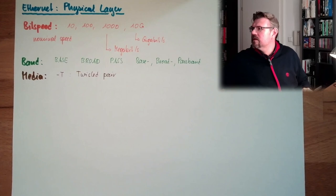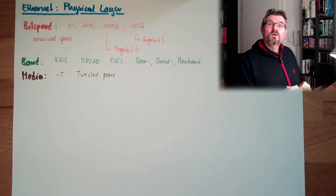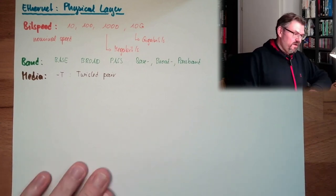So the category somehow indicates how good the shieldings are, how good they are protected from electromagnetic influences. This is a twisted pair cable. This is the thing which we usually identify as Ethernet cable. So that's twisted pair.